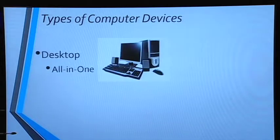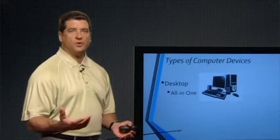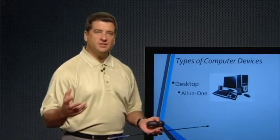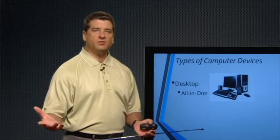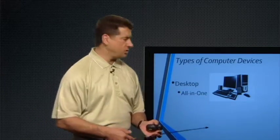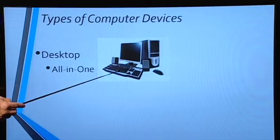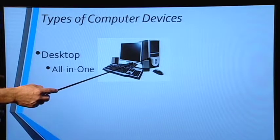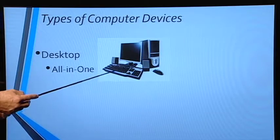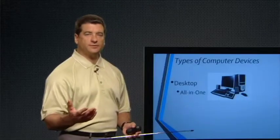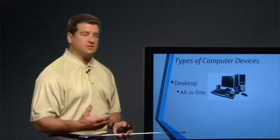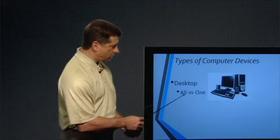The first type is pretty straightforward and we've all known it for quite some time. The modern desktop really came into existence and was used by the masses around 1984. The typical desktop is the one we're all familiar with — it has the monitor, the keyboard, a tower, speakers, a mouse, your typical kind of things.